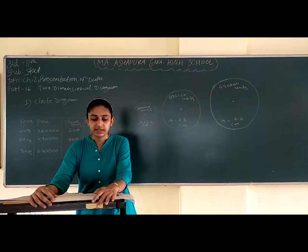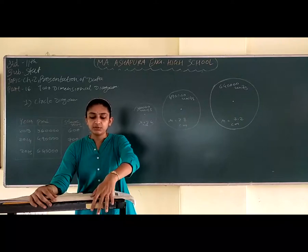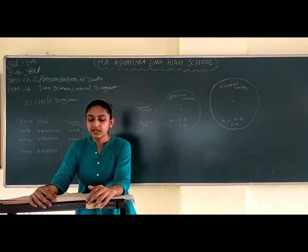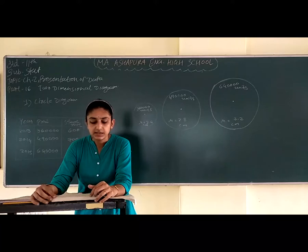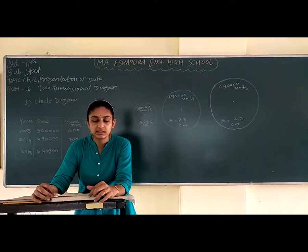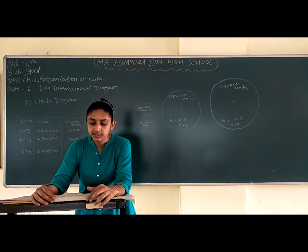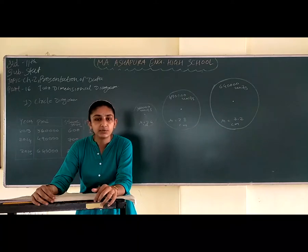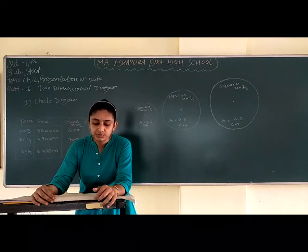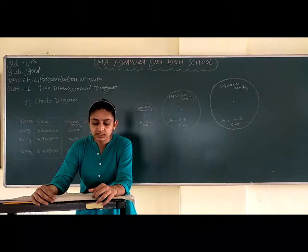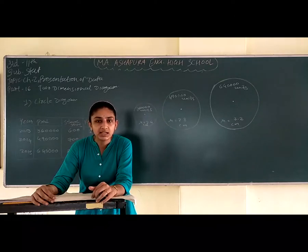First, the circle diagram. When the volume of the data is recorded in two or more places and the time span is large, then circular diagrams are used to present the data. The volume of the data is represented by the area of a circle. The total volume of the data is equal to the area of a circle, which equals pi r squared.